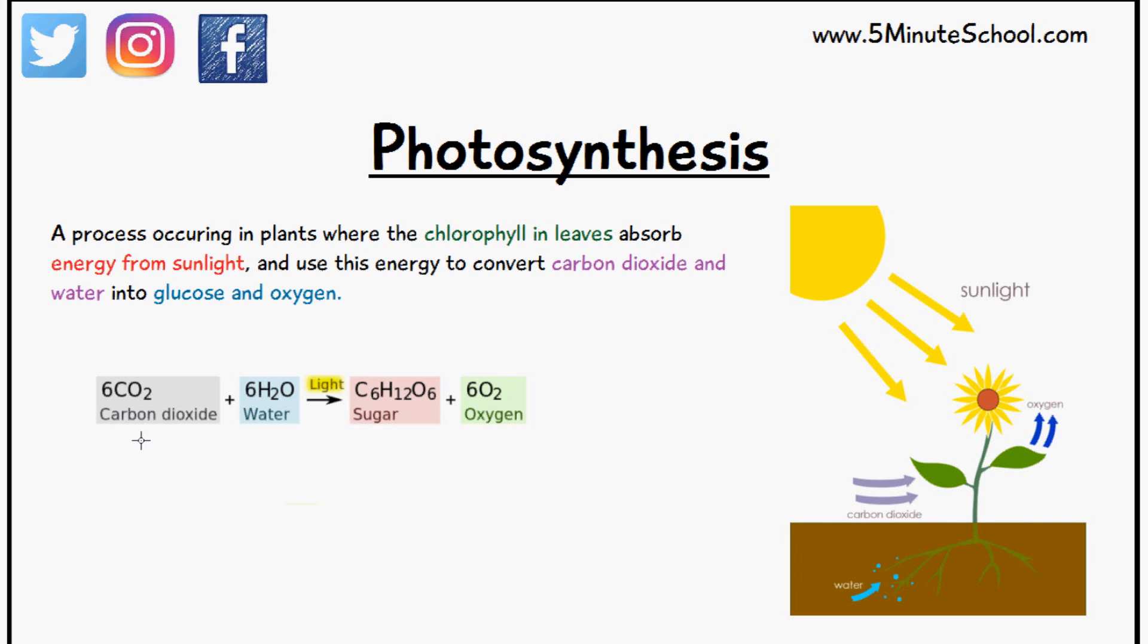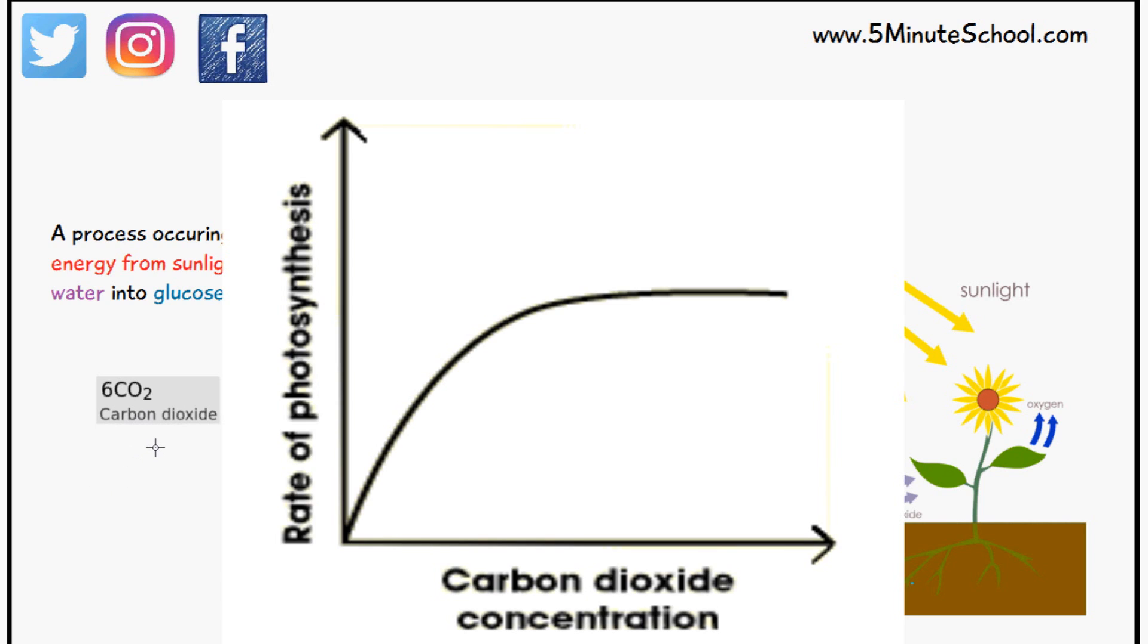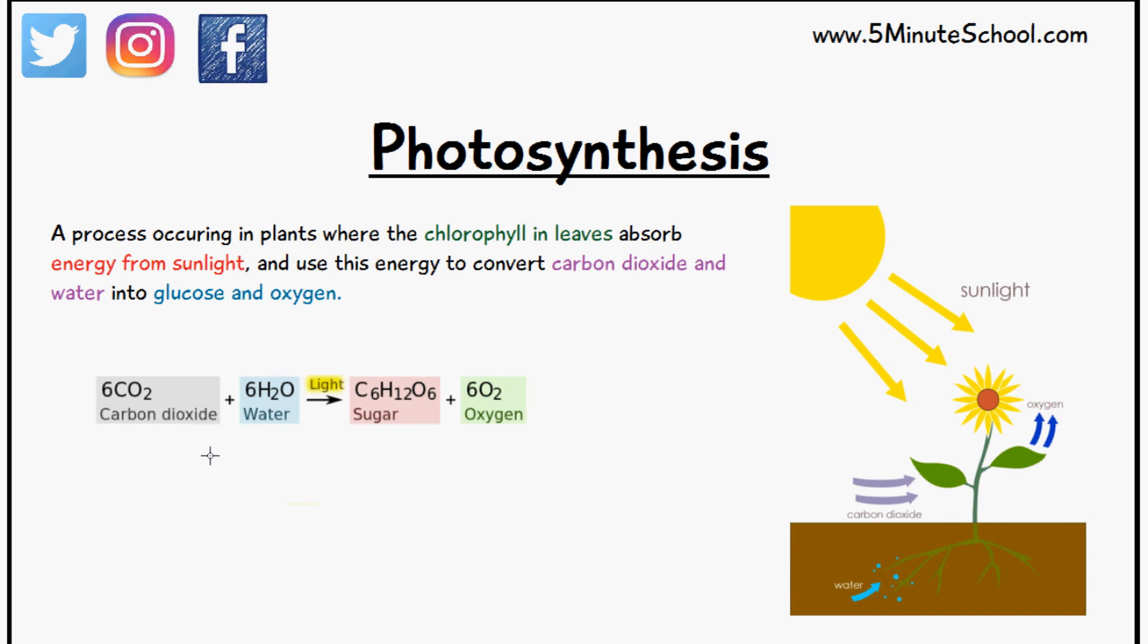So depending on the amount of carbon dioxide available, this affects the rate of photosynthesis. If there's very low amounts of carbon dioxide, the plant will not be able to photosynthesize at a high rate because there isn't much carbon dioxide. However, if there's more carbon dioxide, they'd be able to photosynthesize faster.